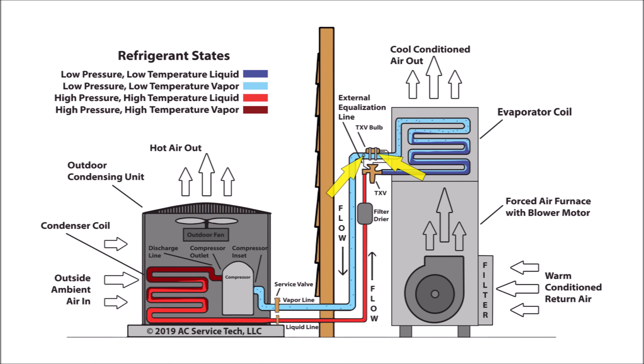You can see that the TXV is actually monitoring the superheat with that external equalization line and TXV bulb. The TXV's job is to monitor and adjust the superheat across that evaporator coil — it can do this by adjusting the refrigerant flow going through the metering device.